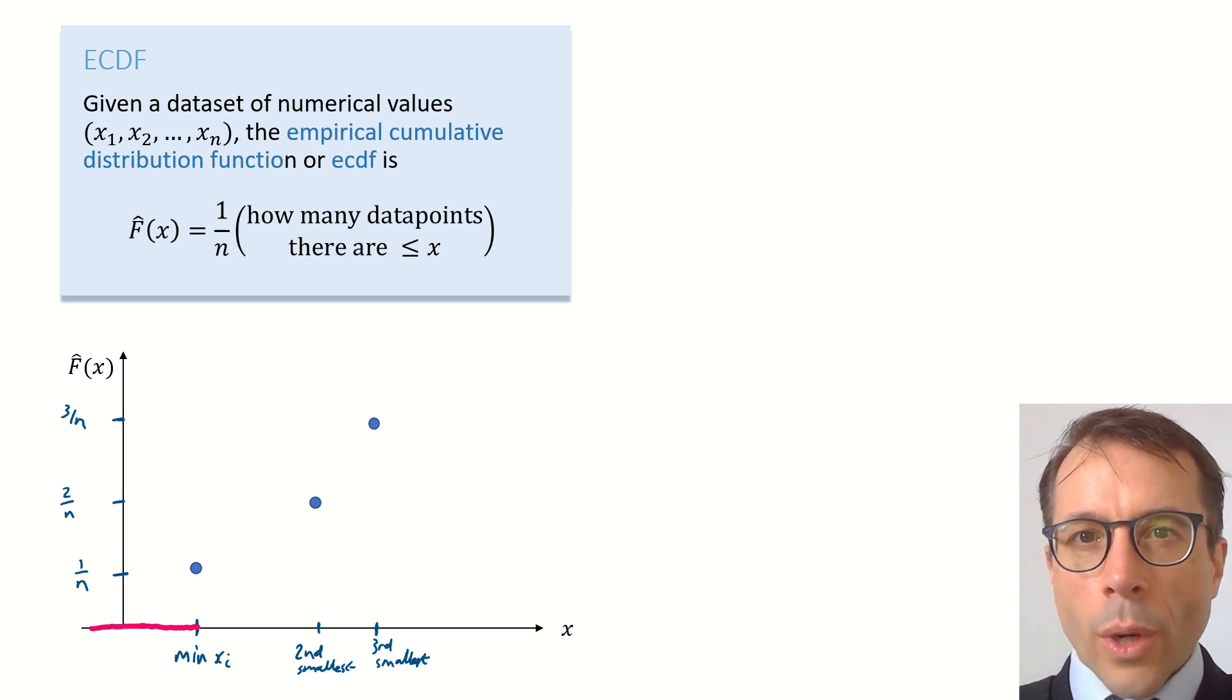For any x in between the smallest and the second smallest, the number of data points that this definition scoops up doesn't change. It's still just one data point, so f-hat of x is flat between those two values. And we can fill in the rest of the f-hat function like this. It's a step function.